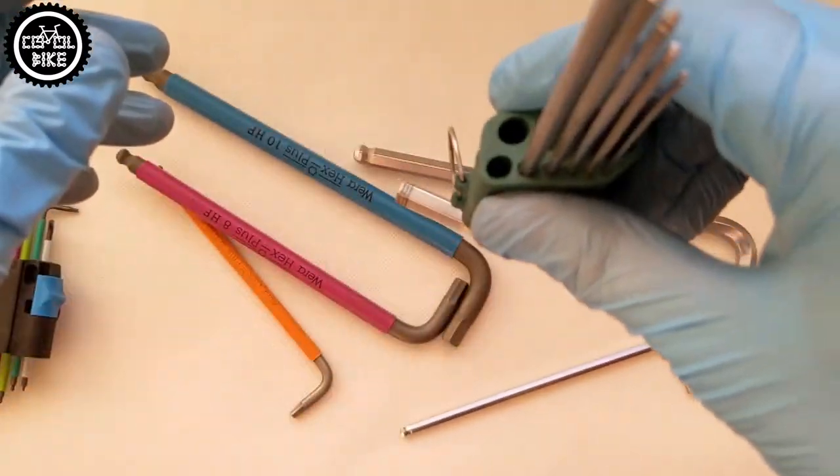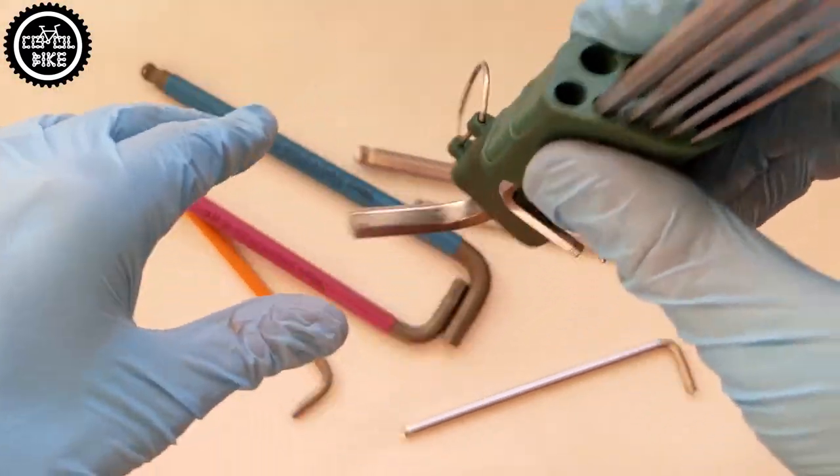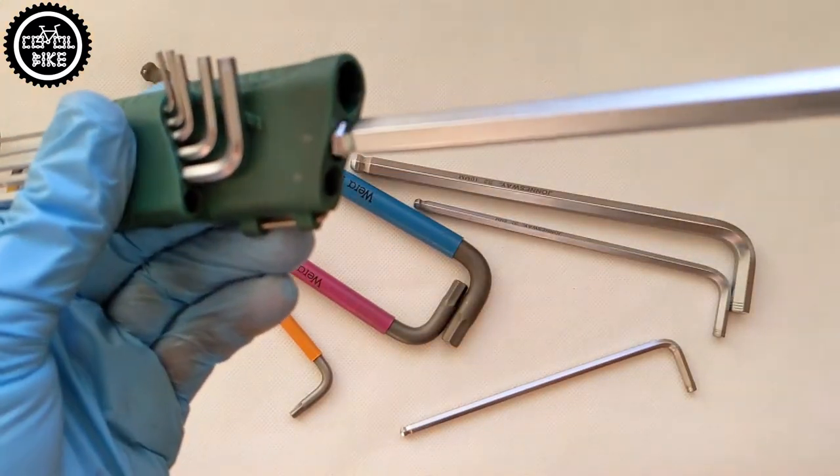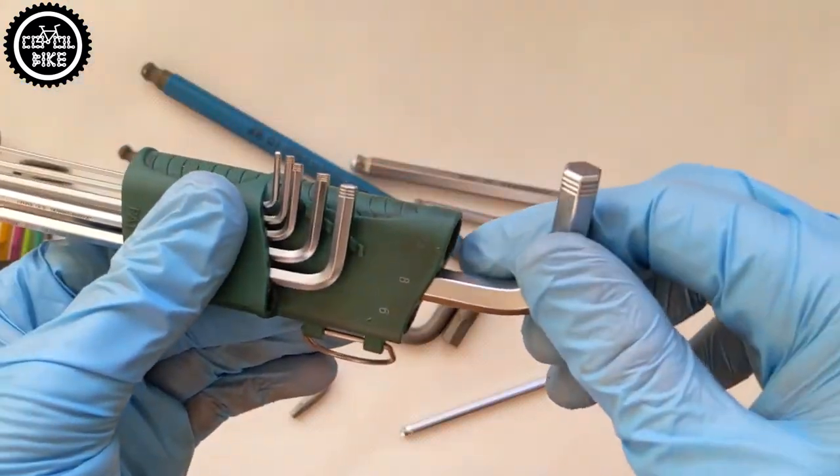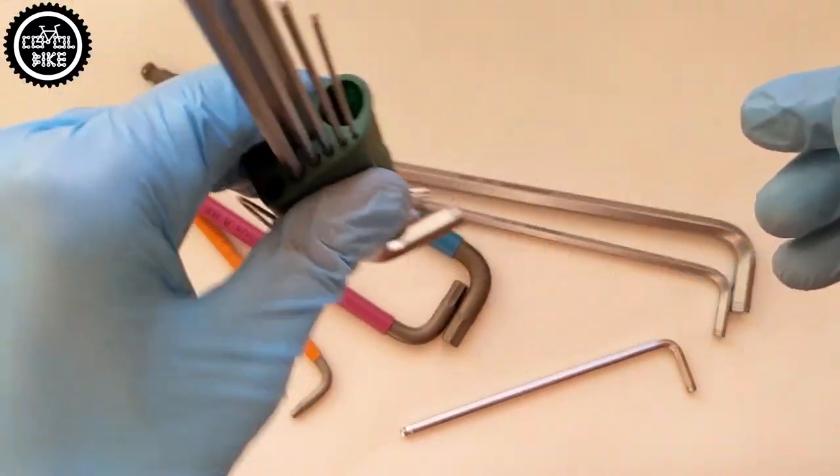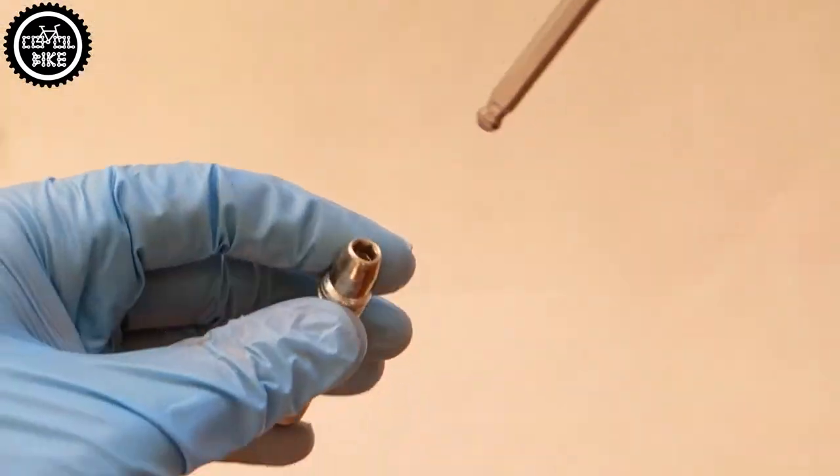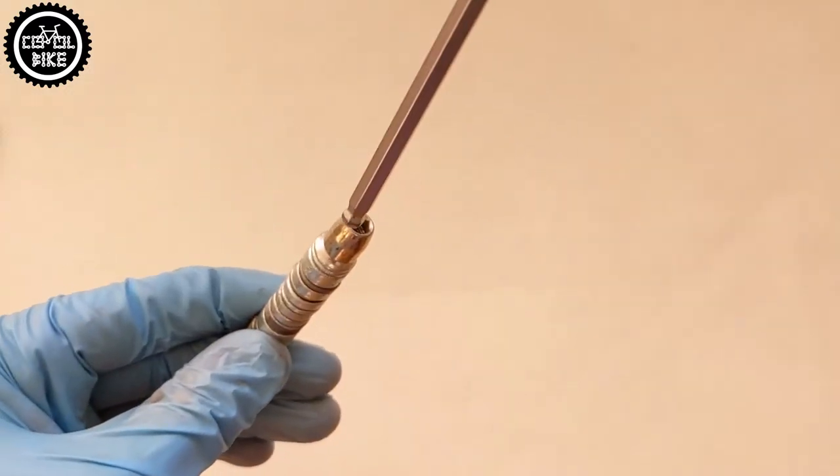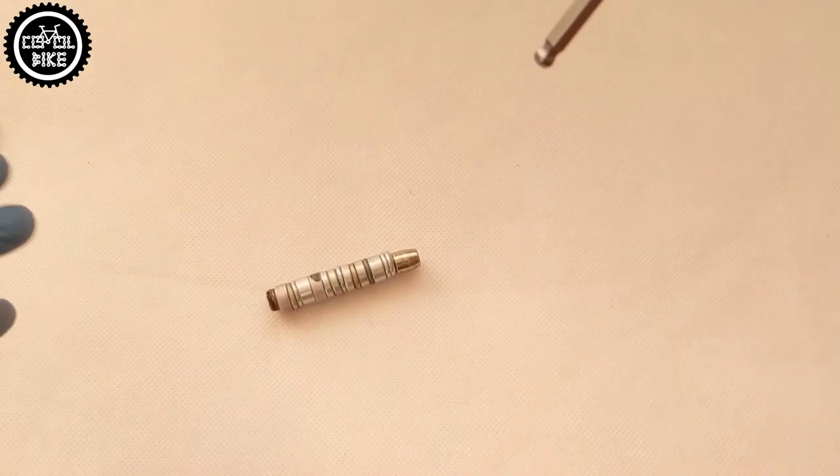I believe that if you need proven and reliable keys for a reasonable price, and you won't need any fancy solution, then Jonsway will be a great choice, and you will be able to inherit such a set even to your grandson. But if you keep dropping bolts and looking for keys every 5 minutes, then VERA will be a better choice, and it will also endure many years of heavy use.